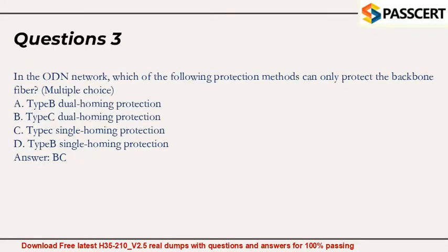Question 3. In the ODN network, which of the following protection methods can only protect the backbone fiber? (Multiple choice.) A. Type B Dual Homing Protection. B. Type C Dual Homing Protection. C. Type X Single Homing Protection. D. Type B Single Homing Protection. Answer: B, C.